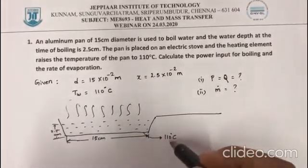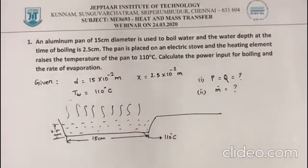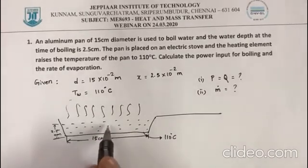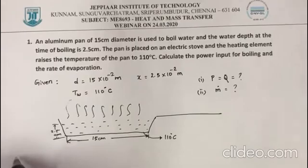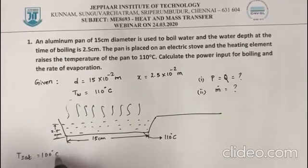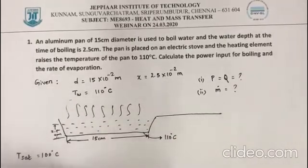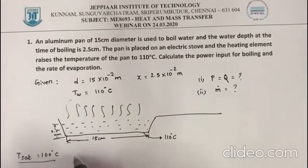So the temperature of this base is 110°C, so this water is becoming a vapor. Now to proceed further, we need to find the properties of water first at a certain temperature. We know that the saturation temperature of water is 100°C, which is the boiling point of water.